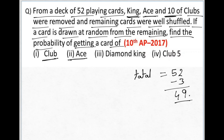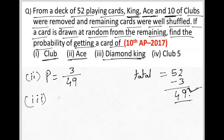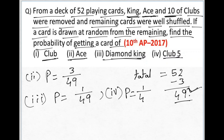For the second part, find the probability of getting an ace. Since one ace was already removed, only 3 aces remain. Probability equals 3 divided by 49. For the third part, find the probability of a Diamond King — there is only one Diamond King remaining. Probability equals 1 divided by 49. For Club 5 — there is one club 5 remaining, so probability also equals 1 by 49.